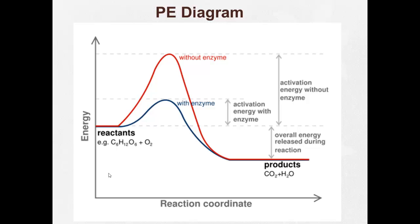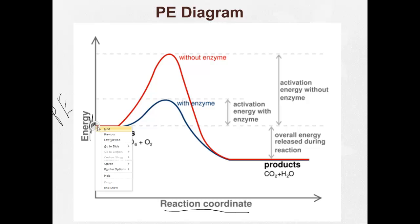Let's take a look at a potential energy diagram. This is something you're going to need to draw out — each diagram we see in this video, I want to see in your notes. On our y-axis we have the energy, specifically the PE, the potential energy. The x-axis, fancy term, is the reaction coordinate — really just think of it as the time it takes a reaction to take place. Here at the beginning is before the reaction takes place, and over here at the end is when the reaction is complete. Any point in the middle represents where the reaction is at the moment.